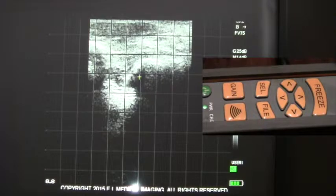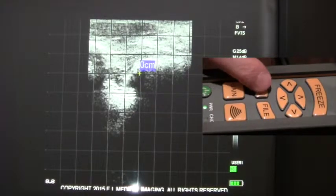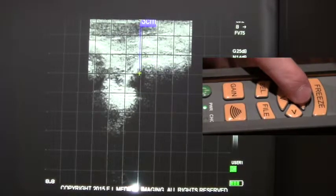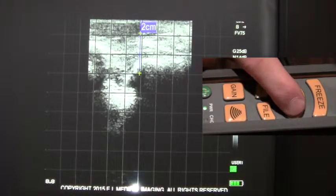Use the arrow keys to move your first caliper, press select to set, use the arrow keys then to adjust your second caliper.